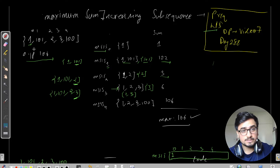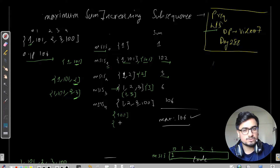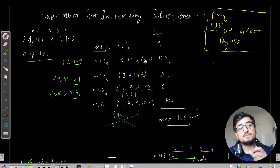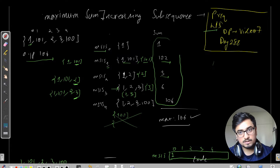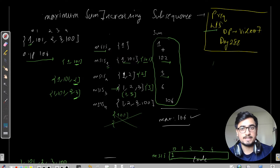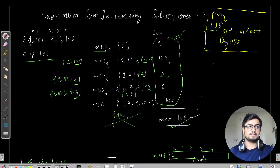For MSIS[4], we consider all elements with 100 as the last. The maximum subsequence formed is 1, 2, 3, 100 — avoiding all other possibilities to save time. The sum is 106. Now we have considered all possible increasing subsequences ending at each index. Taking the max across all MSIS values gives us 106, which is the answer.